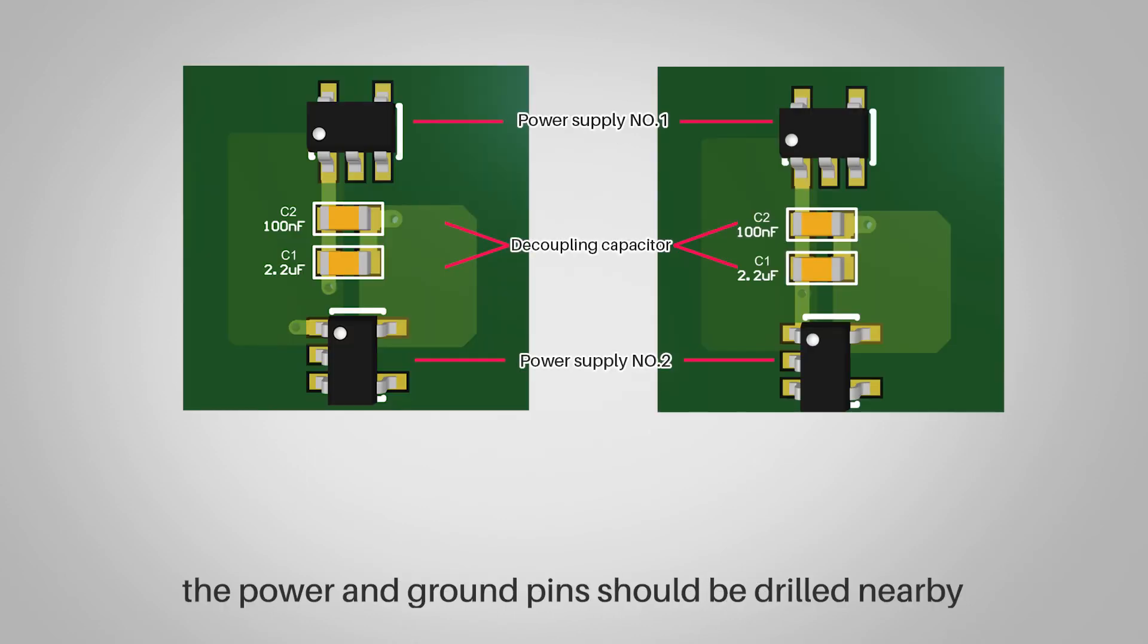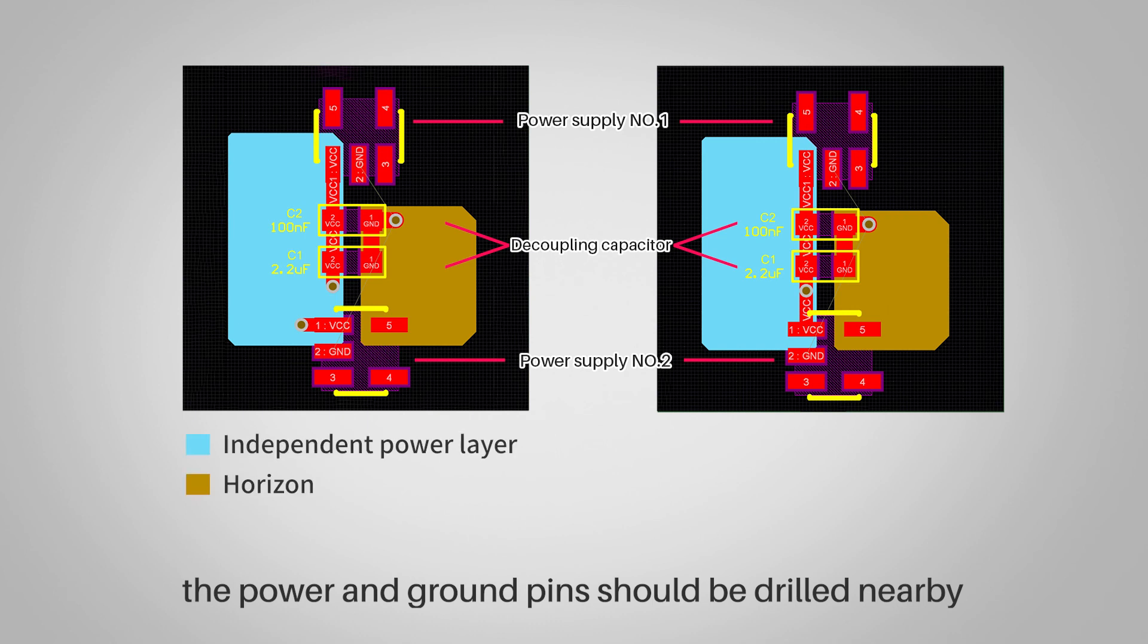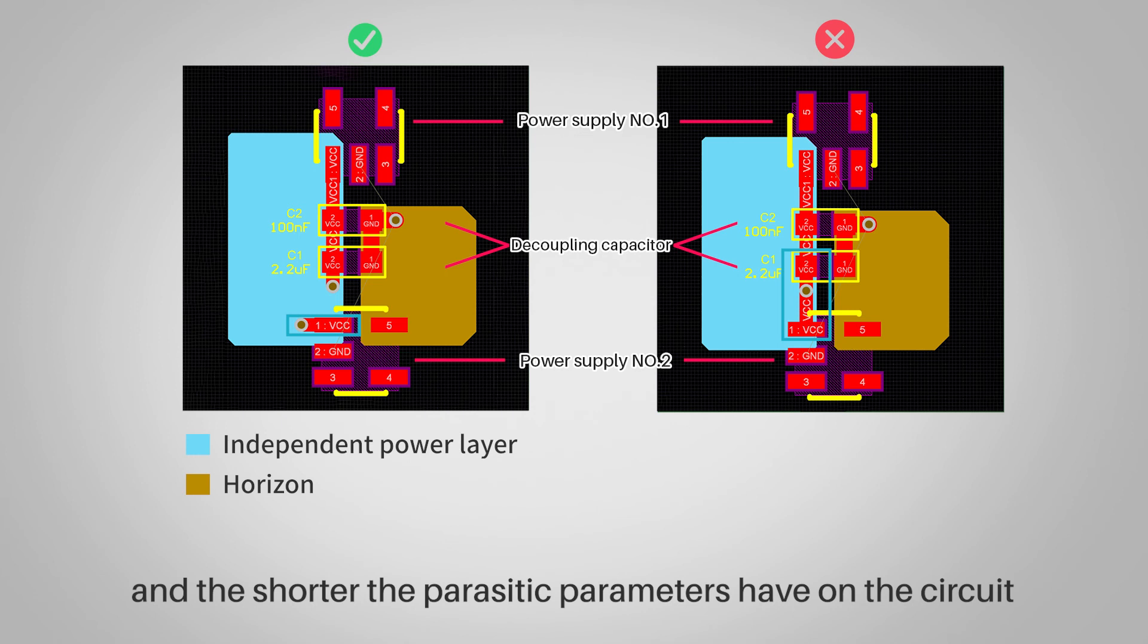It is recommended that the power and ground pins should be drilled nearby. The shorter the lead between the via and the pin, the better, and the less impact the parasitic parameters have on the circuit.